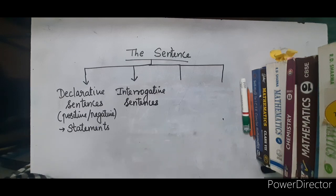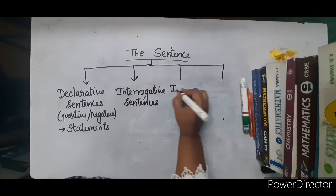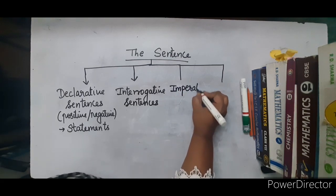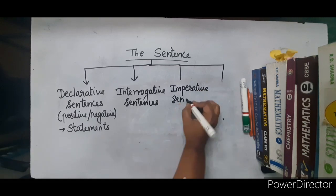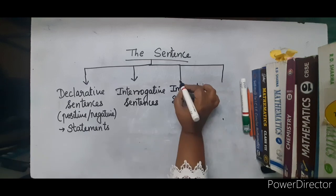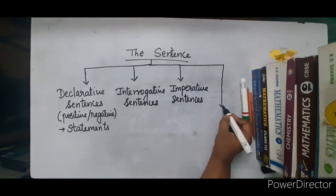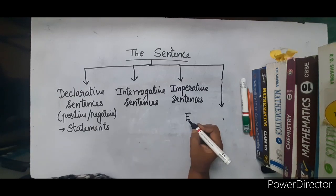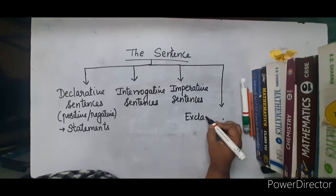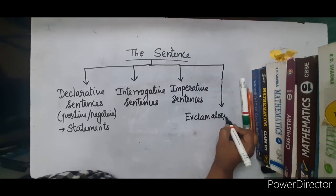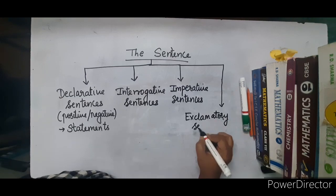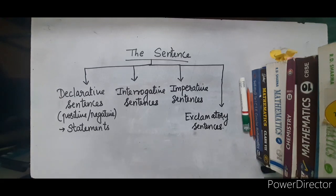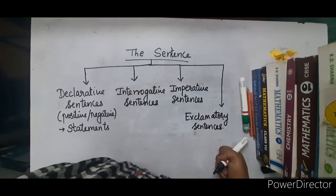The third type of sentences are known as imperative sentences. And the last — the fourth type of sentences — are exclamatory sentences. We will be learning all these four sentences one by one and will be doing a few examples related to them.